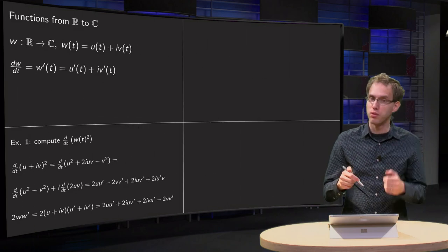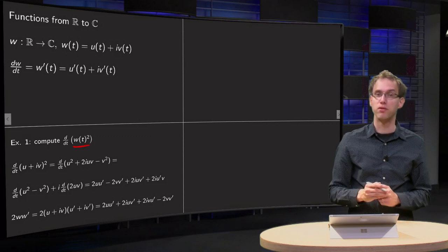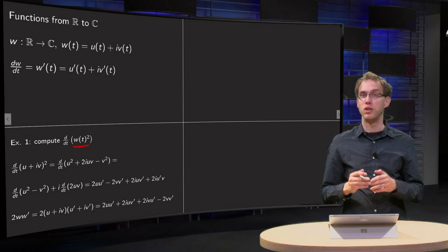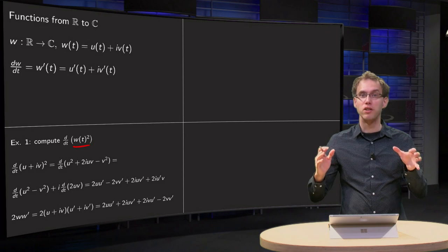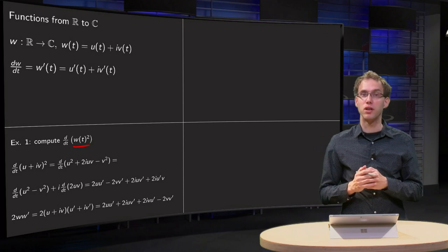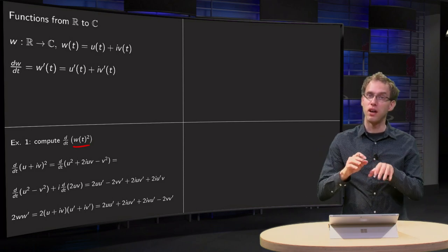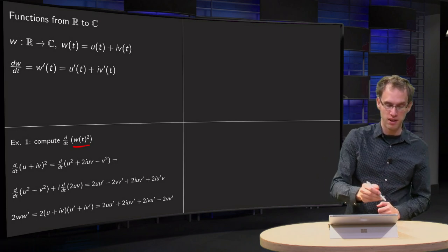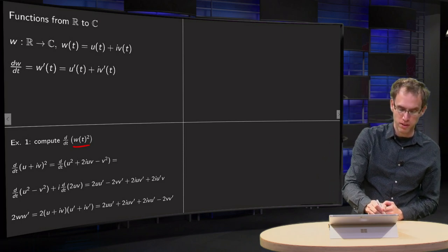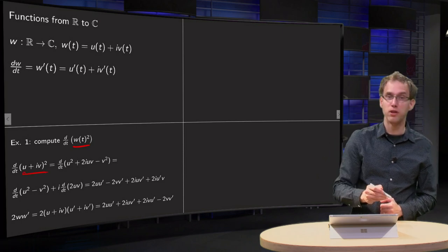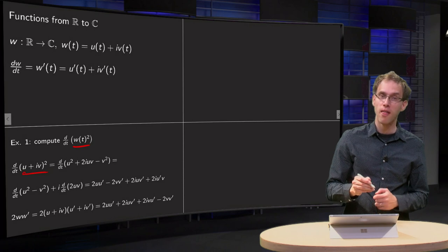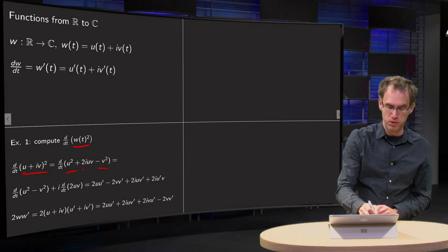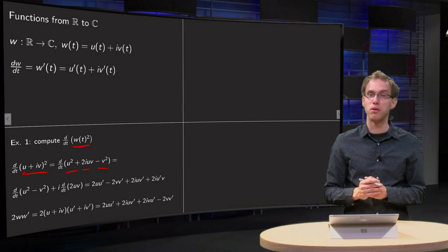So what happens if you compute, for example, the derivative of W squared? I have to write W squared in terms of u and v, split real and imaginary parts and differentiate them separately. So we have d/dt of (u + i·v)², and work out the brackets as u² − v² + 2i·u·v.